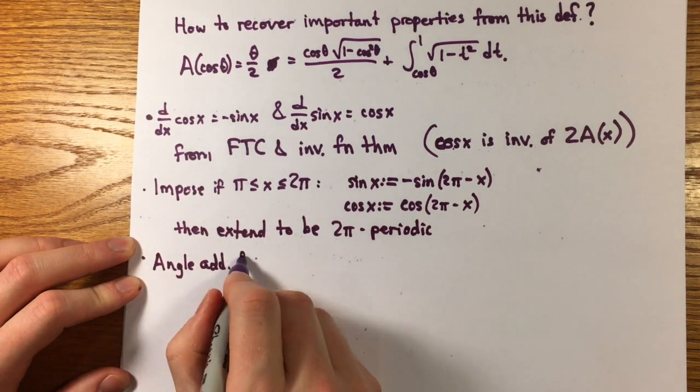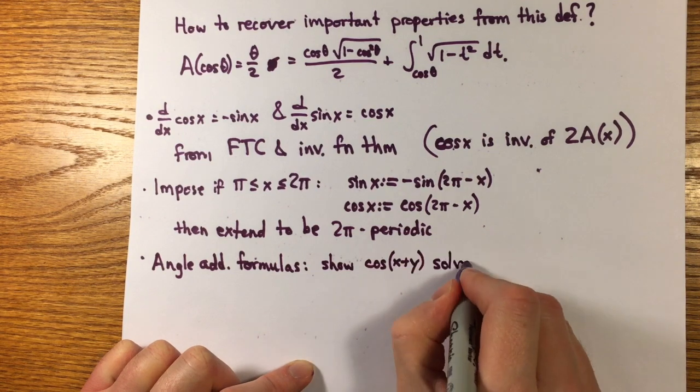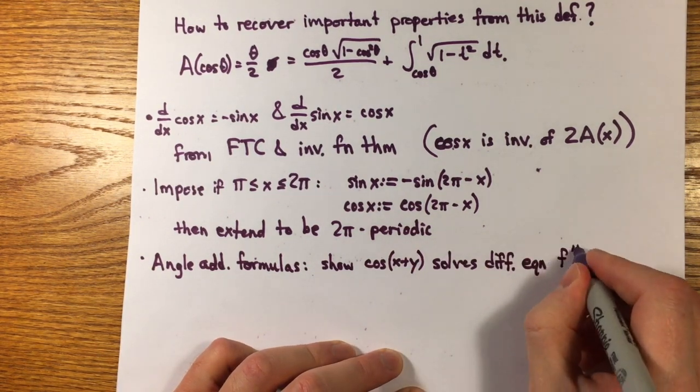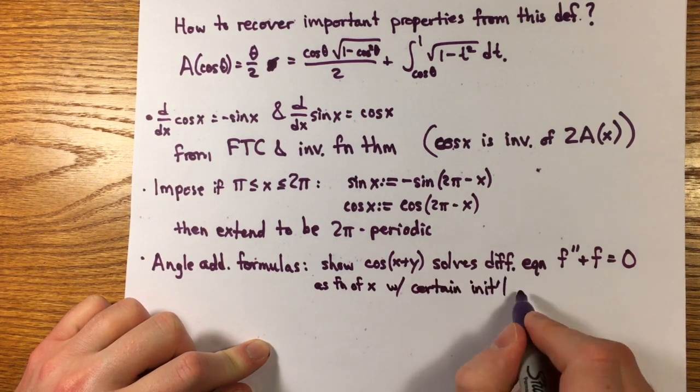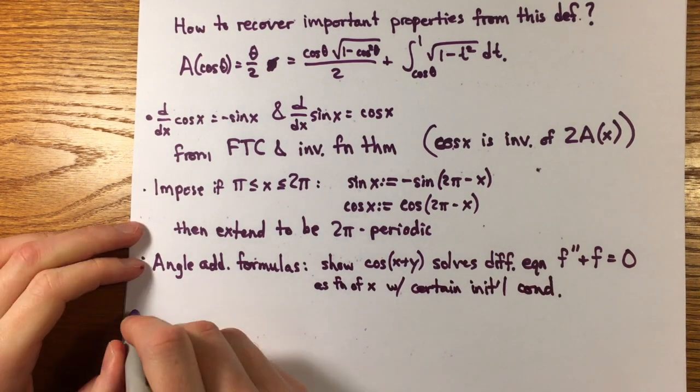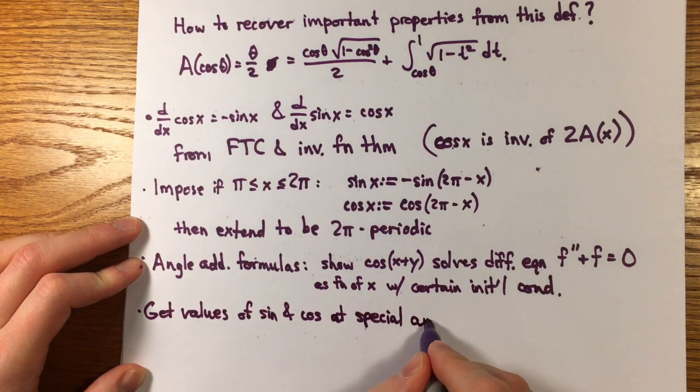Computing values at special angles, though, is not immediate. Spivak suggests establishing the angle sum identities by noting that, for example, cosine of x plus y as a function of x satisfies the differential equation f double prime plus f equals 0 with initial conditions f of 0 equals cosine of y and f prime of 0 equals minus sine of y.